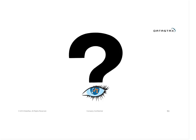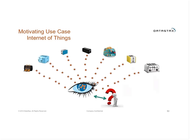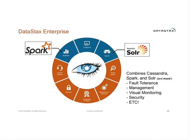DataStax provides a number of things along the bottom of the stack — things that enhance and make Cassandra enterprise class — and that includes OpsCenter as the visual monitoring tool. Next question: do you encourage or discourage running Cassandra nodes along with Spark workers, and under what hardware conditions?